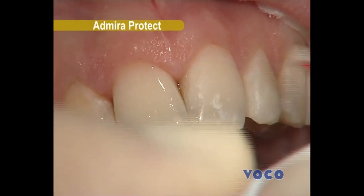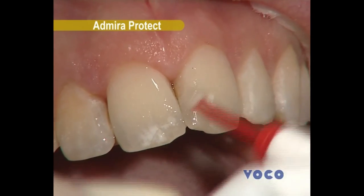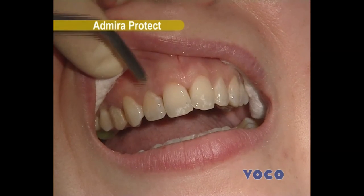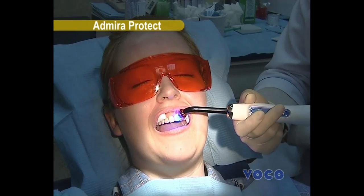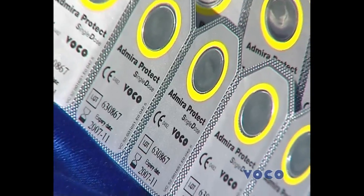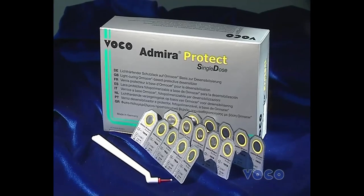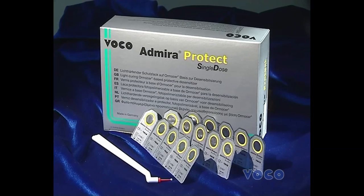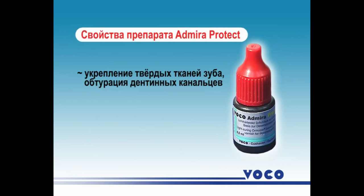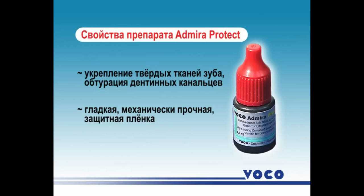AdmiroProtect is the world's first synthetic polymer desensitizer from the ARMA care family for isolating hard tissue of the tooth from external stimuli. The unique composition of AdmiroProtect provides strengthening of hard tissue of teeth due to the release of fluorine and reliable obturation of dentine tubules. The formulation offers a smooth, mechanically strong, and abrasion-resistant protective film on the surface of dentine or tooth enamel, which prevents the fixation of dental plaque.